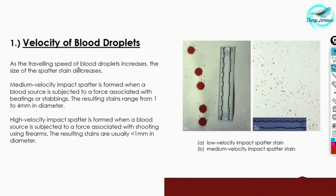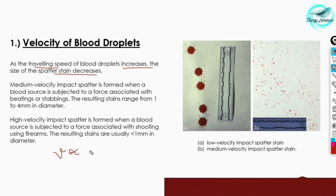As the traveling speed of blood droplets increases, the size of the spatter stain decreases. So velocity of blood droplets is inversely proportional to the size of the stain — greater the velocity, less will be the size of the blood droplets.